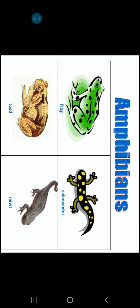Next comes Amphibians. They are called cold-blooded land animals. Frog, toad — such animals we call amphibians.